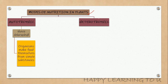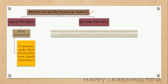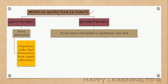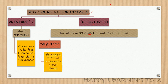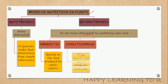However, there are certain plants that cannot prepare their own food because they do not have chlorophyll needed to synthesize food. Such plants may be parasitic, wherein they depend on food produced by other plants, or they may be insectivorous, wherein they trap insects and digest them to obtain nutrition.